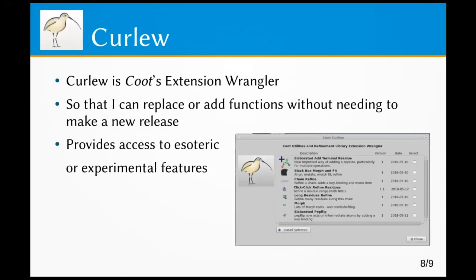We also have Curlew, which is Coot's Extension Wrangler — standing for Utility Refinement Library Extension Wrangler. The primary aim is that I can replace or add functions without needing to make a new release, because making new releases is tedious. So if I wanted to update a scripting function, I could easily do that within a minute or two by adding it into Curlew.